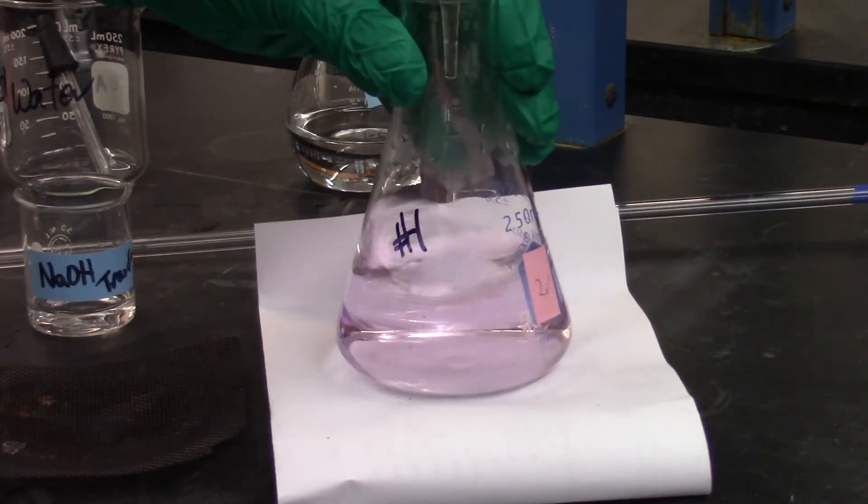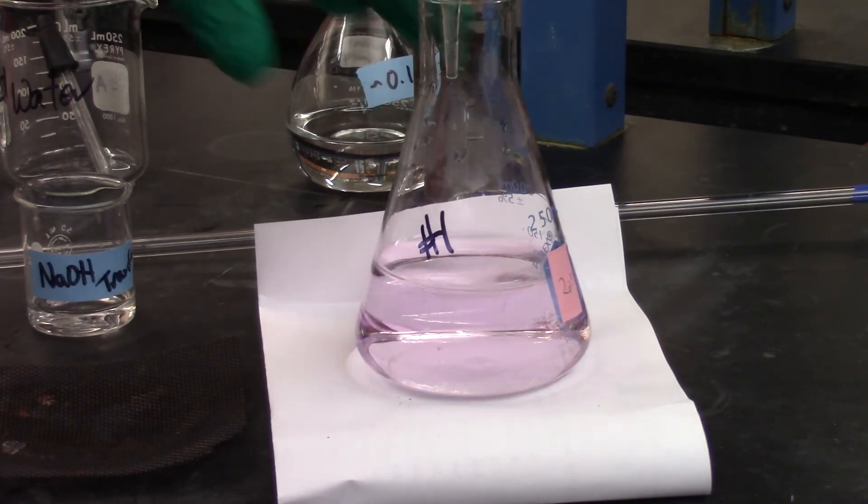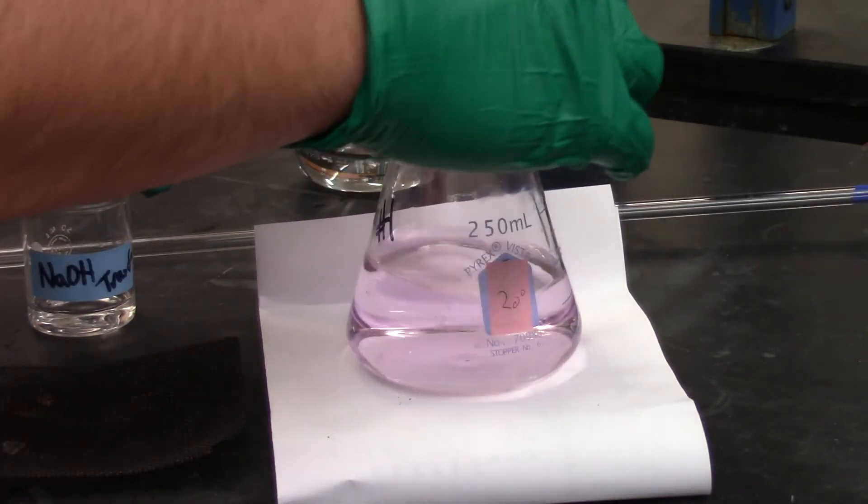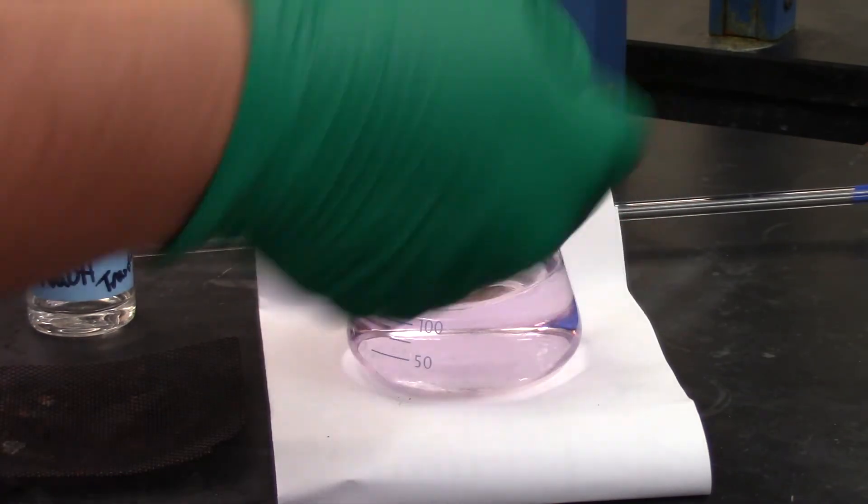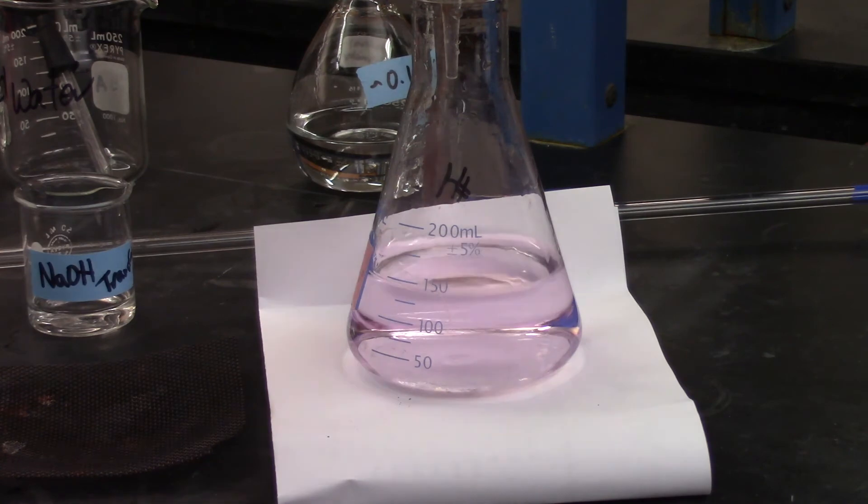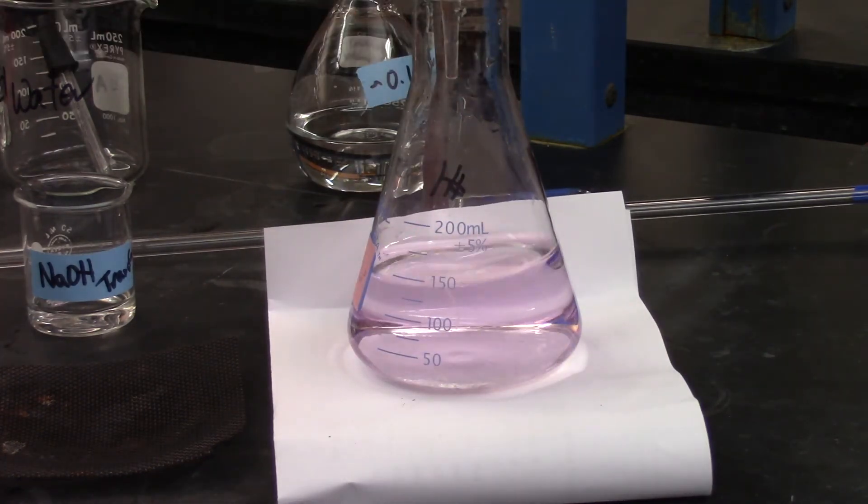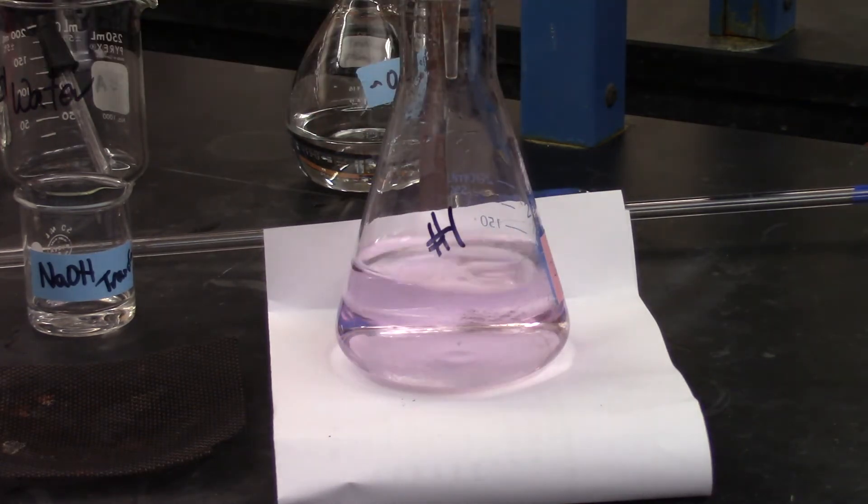So as you can see, I have my pink color. And that is going to be the appropriate color you want for your titration. I'm going to rinse down the sides here. So any unreacted KHP will fall down and actually react and can make that color a bit lighter. Awesome. So that's titration one, and I'm going to record that volume.